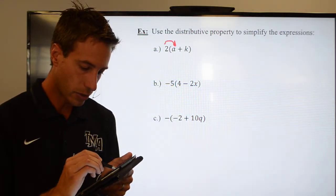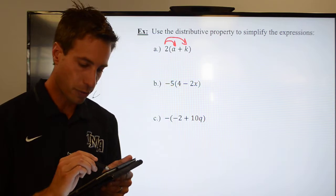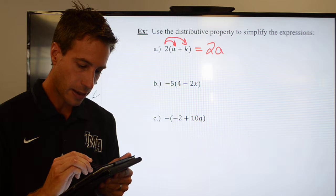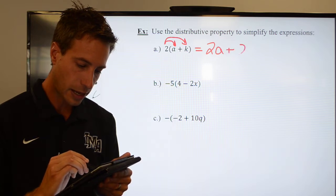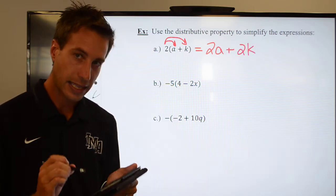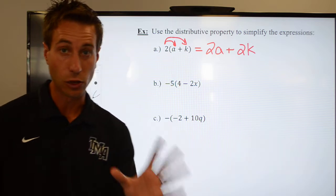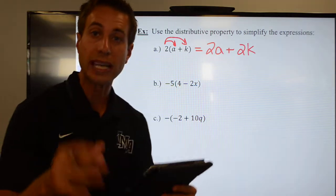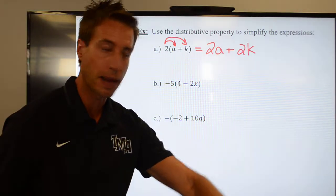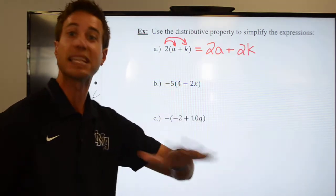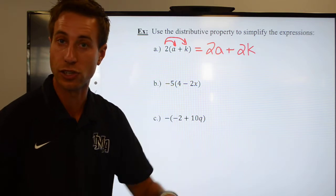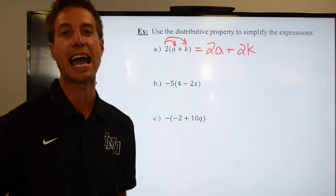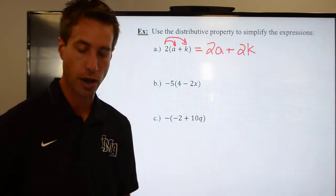We're going to distribute the 2 through the parentheses, and that is going to give me 2 times a, which is 2a, and then I will add to that 2 times k, which will be 2k. Now, at this point, you would then look to combine like terms. Remember, like terms are the same variables raised to the same powers. We don't care about the numbers. 2s are the same, but it doesn't matter according to our definition of like terms. Just the variables matter, and they're not the same variable. You cannot add these guys together, not like terms.